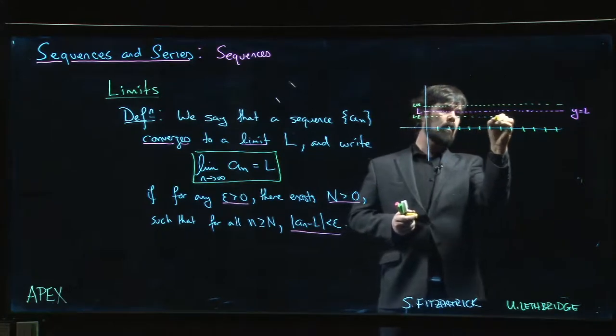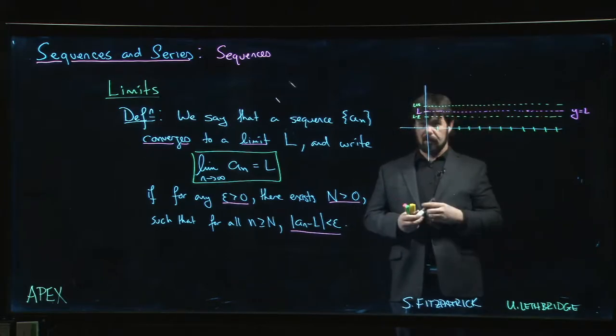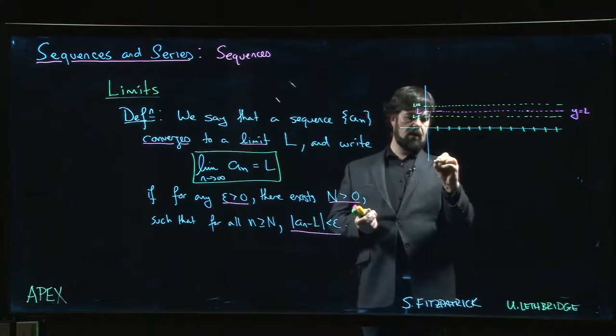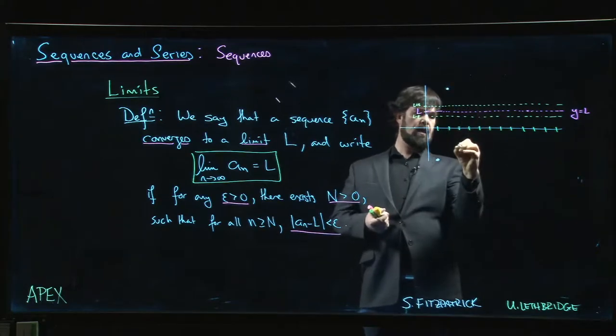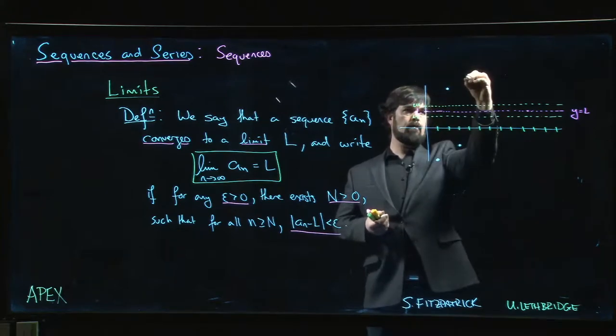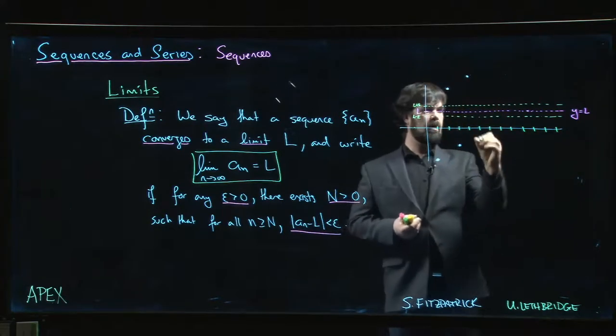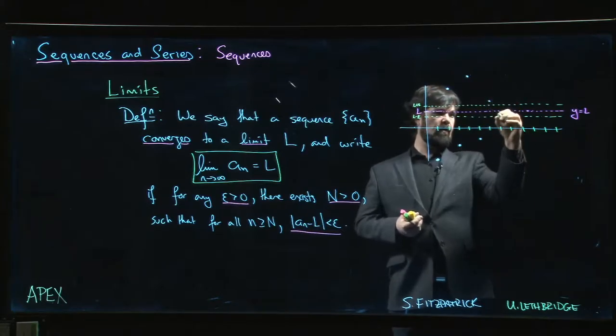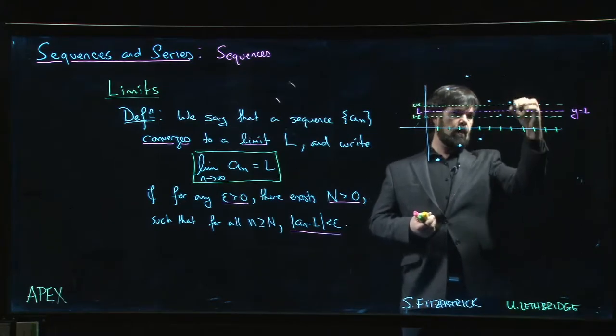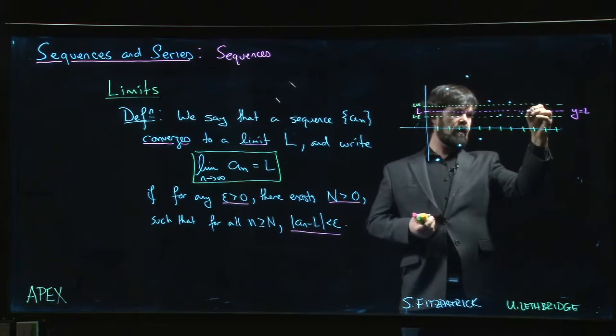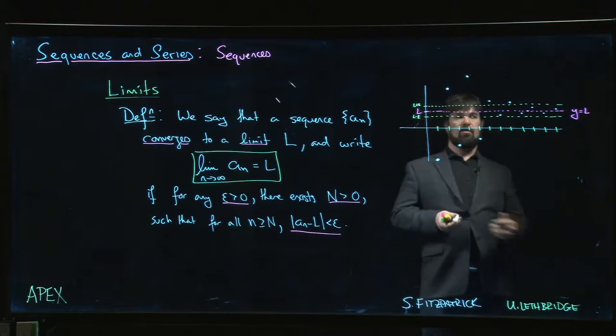All right, so we get this little strip of width 2 epsilon centered on L, and then you start plotting the terms in your sequence. So maybe the first one is down here, like here's a_1, and maybe a_2 is up here, and maybe a_3 is down here, and a_4 maybe it's up there, a_5 is here, a_6 is there, a_7 lands inside. Oh great, but then suddenly a_8 is out again. But then a_9 is inside, a_10 is inside, 11 is inside, 12 is inside.